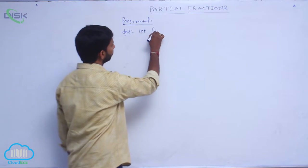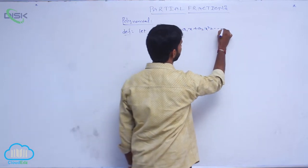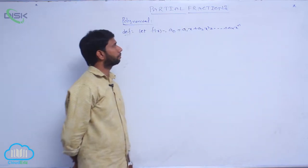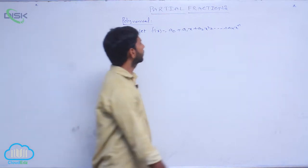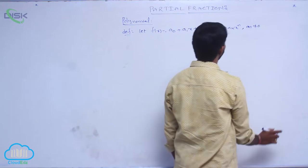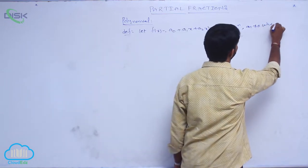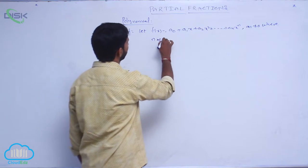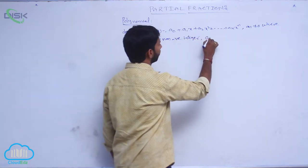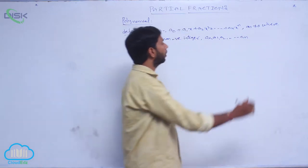Let f of x be equal to a-naught plus a1x plus a2x squared plus and so on a-n into x power n, where a-n is not equal to 0, n is a non-negative integer, and a-naught, a1, a2, and so on a-n are real numbers.